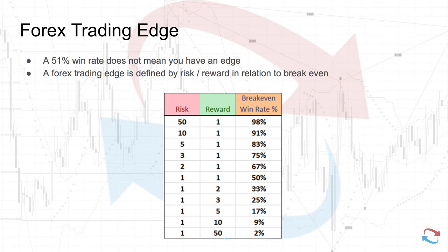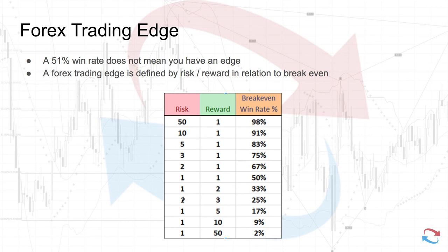If you're backtesting a strategy and you're seeing a 40% win rate at a one-to-one risk/reward and you think it doesn't work — before you throw it away and system-hop, try backtesting with a two-to-one, three-to-one, or higher reward-to-risk ratio using this chart, and see what your win rate becomes. If you're getting more than a 25% win rate while always going for a three-to-one, then you have a trading edge.